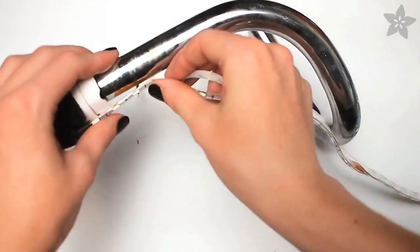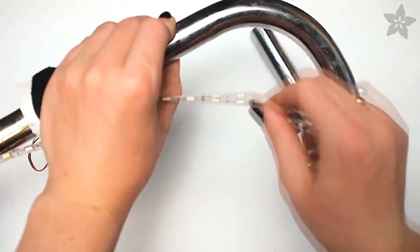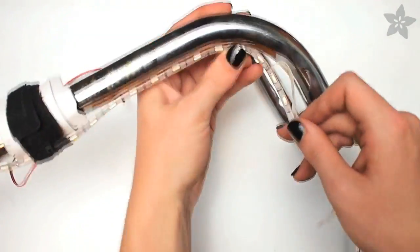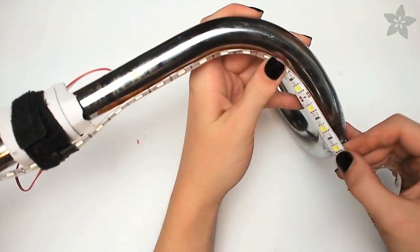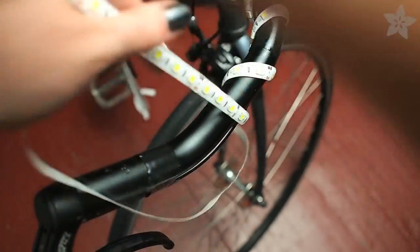Center your solder joint right in the middle of your bike's handlebars and trim the paper backing to expose the adhesive on the LED strip. Then affix it to your handlebars in the design you like.